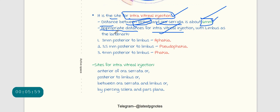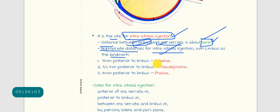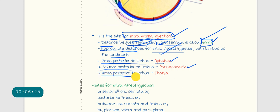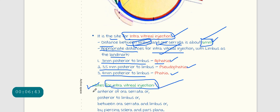Some landmarks in the eye: 3 mm posterior to the limbus is a structure called phakic; 3.5 mm posterior to the limbus is pseudophakia; and 4 mm posterior to the limbus is a structure called fascia phakia. The sites for intravitreal injections are: anterior to the ora serrata, posteriorly to the limbus, in between the ora serrata and the limbus, or by piercing the sclera and the pars plana.